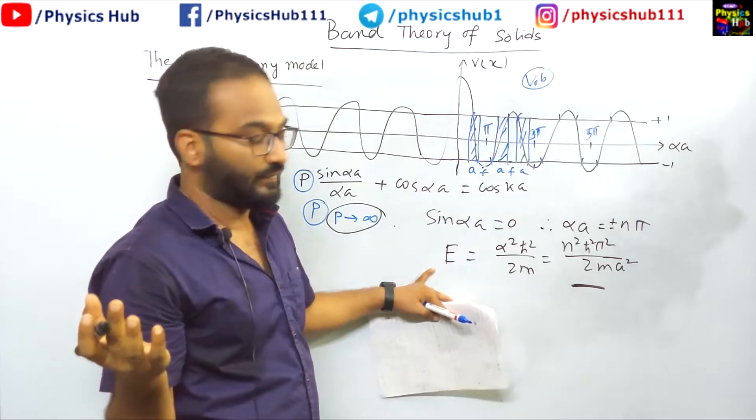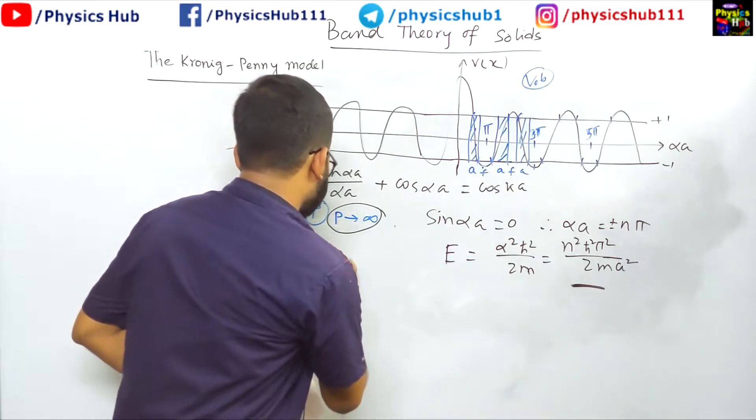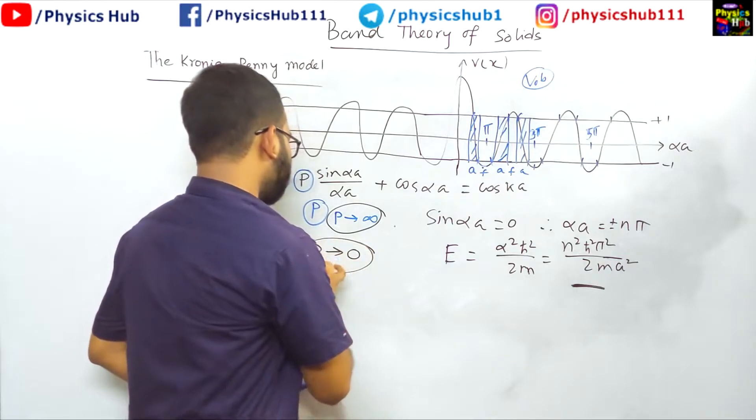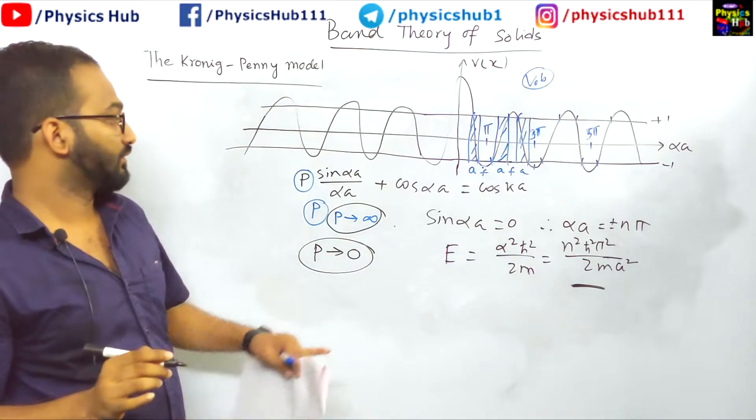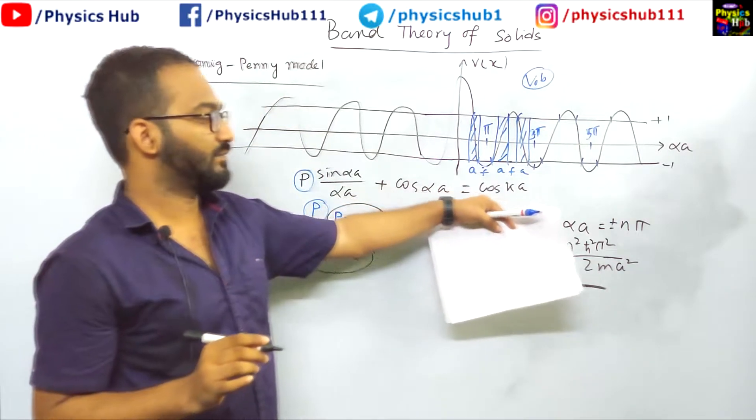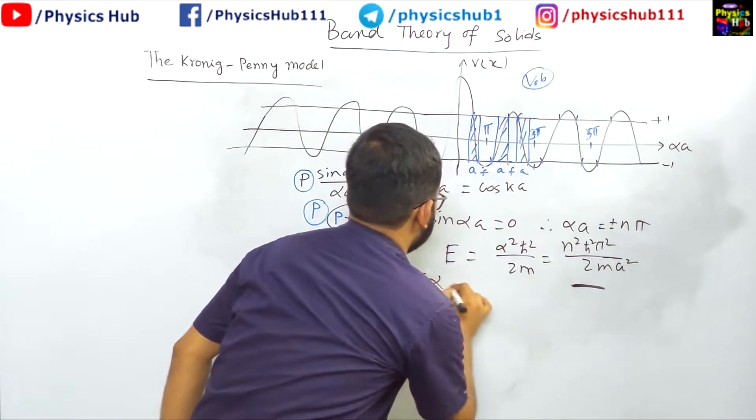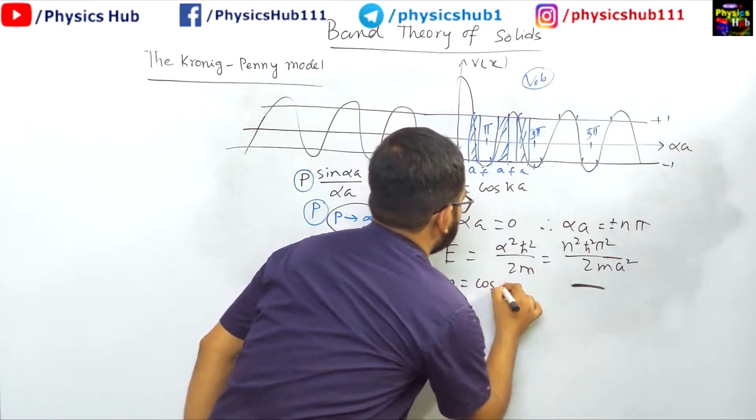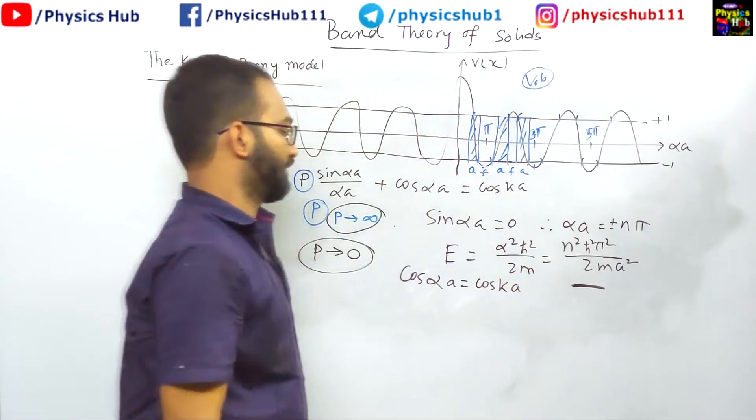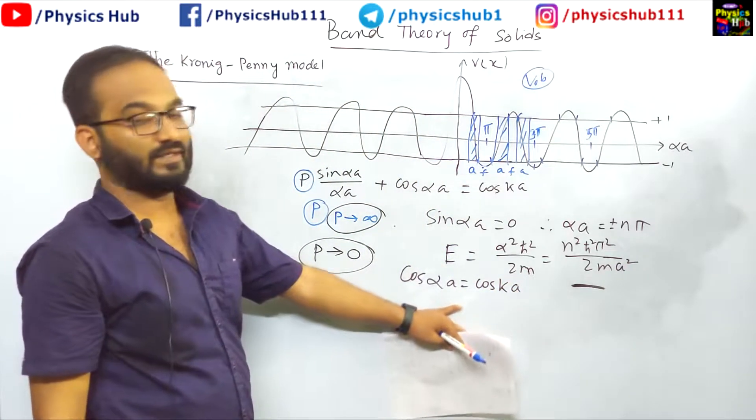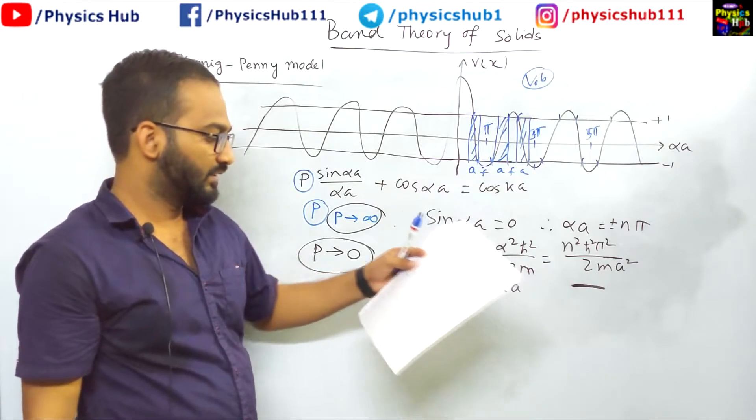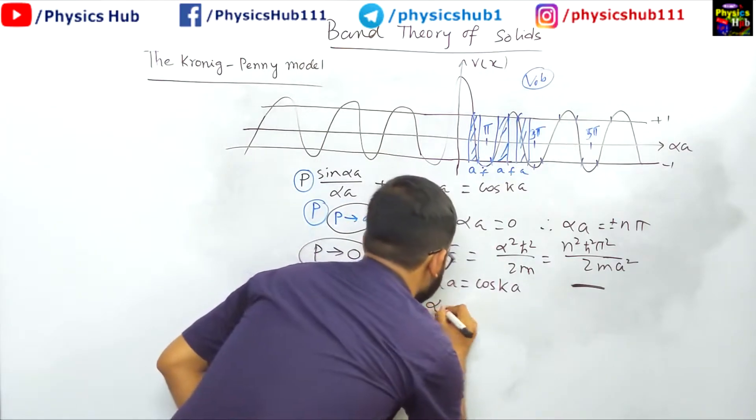Okay, now if you consider p tends to 0, then how will this equation be modified? This term will be 0. So cos(αa) will become cos(ka). What does it say? αa equals ka, it means alpha equals k.